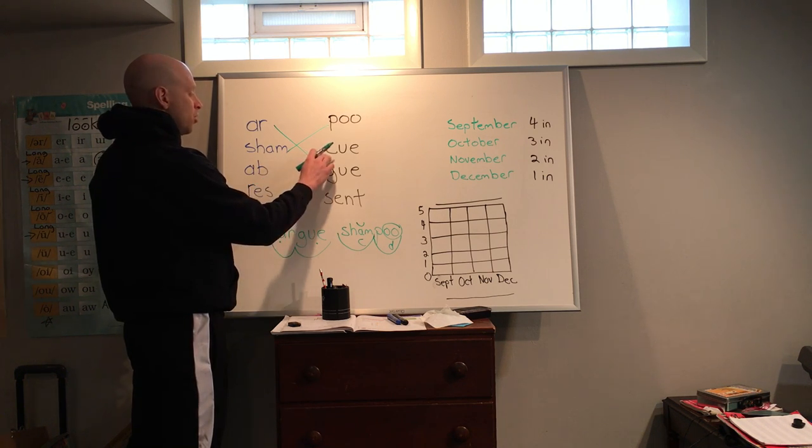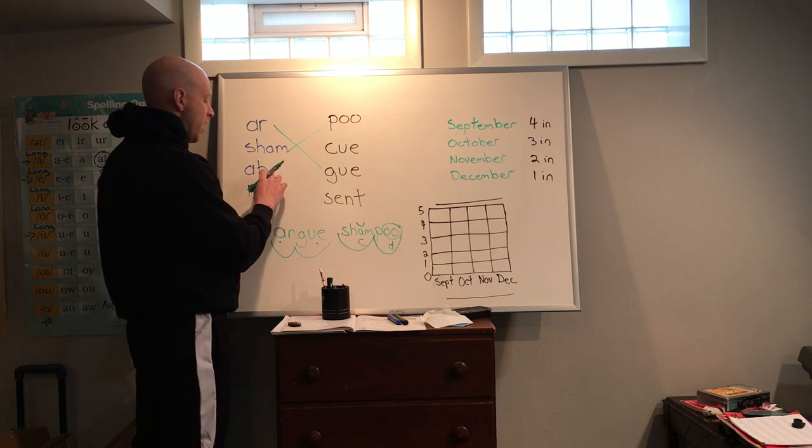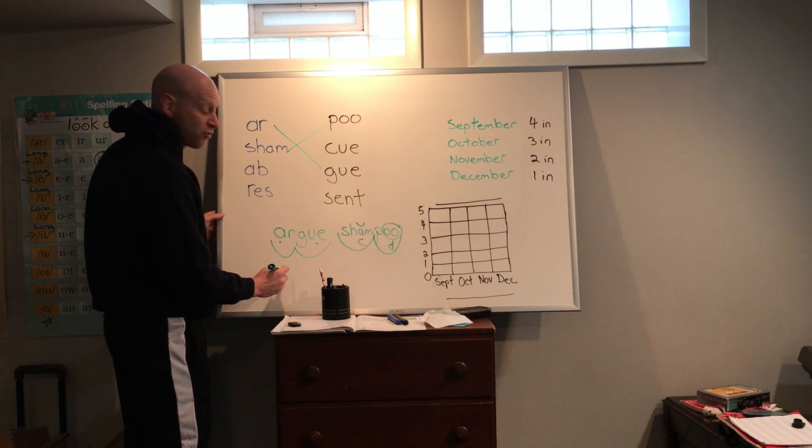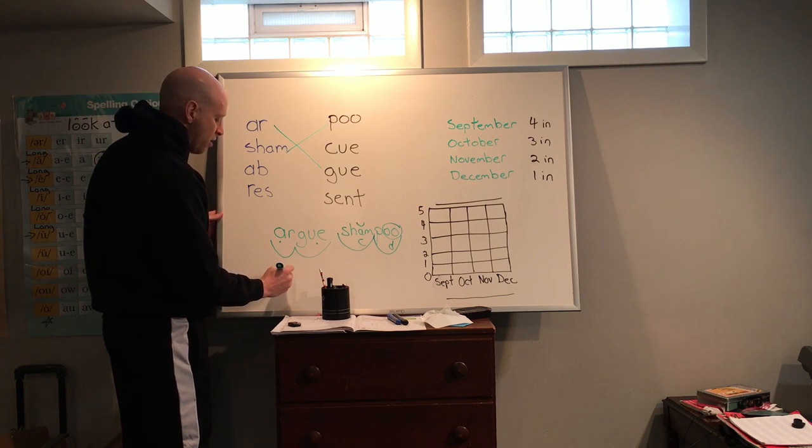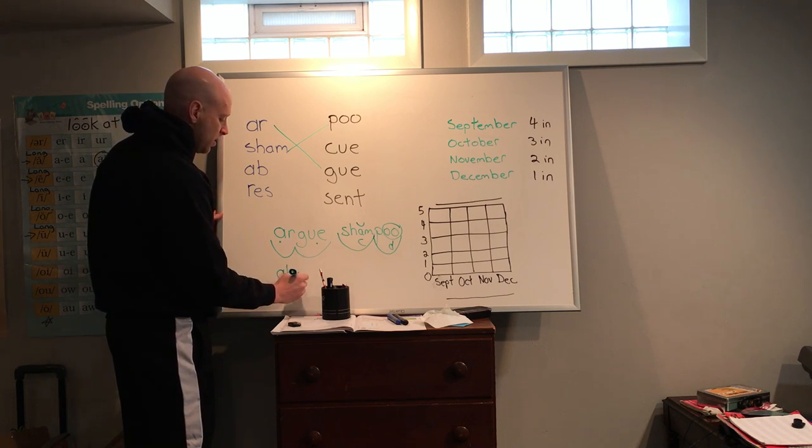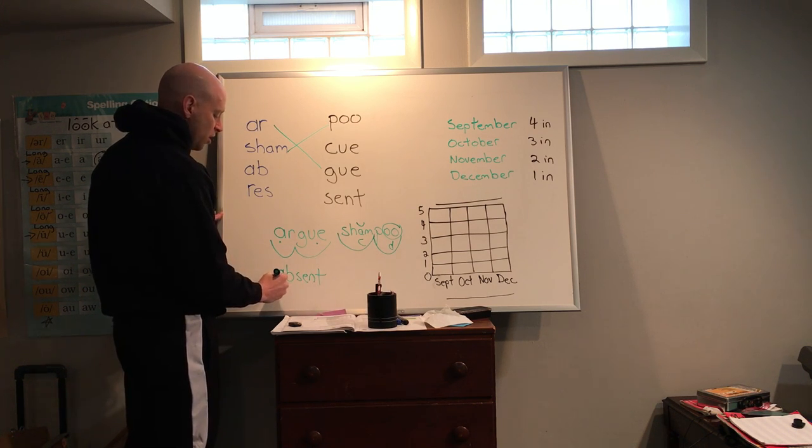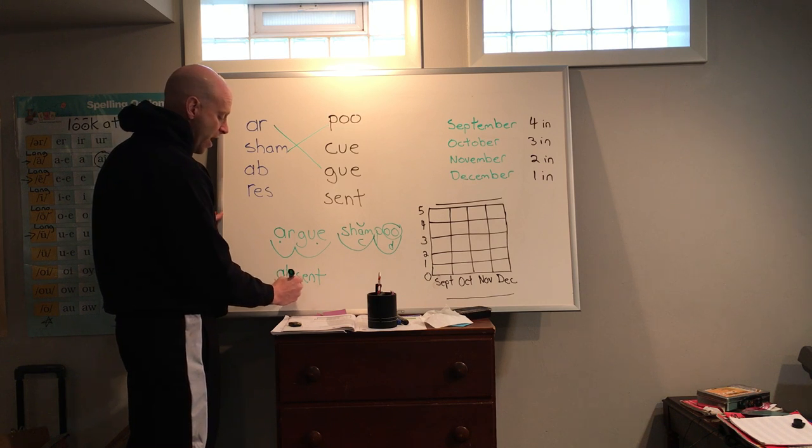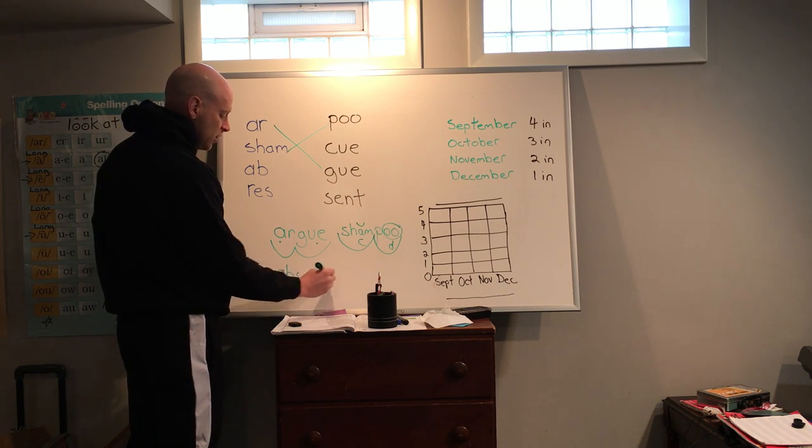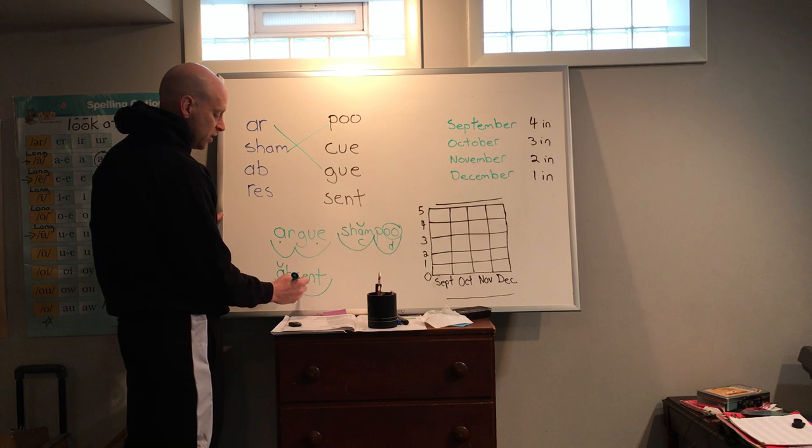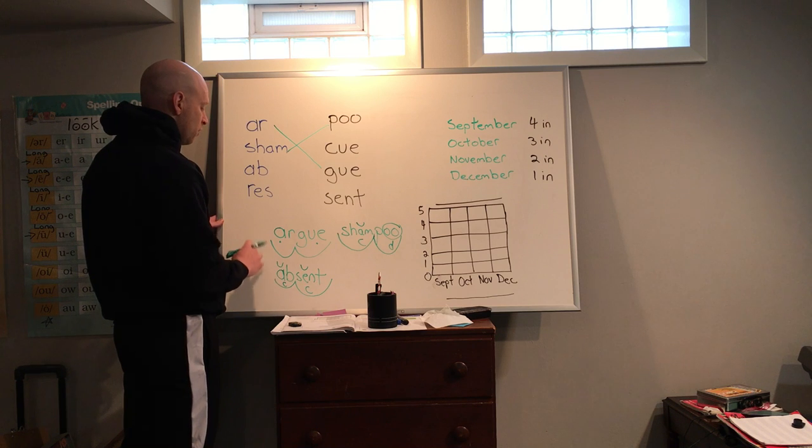Ab-cue. Never heard of that one. Absent. Yeah. I feel like we've been absent for a while. So ab-scent. Ab-scent. So we have two syllables. Ab-scent. We have the short A. Ab. It's closed. Scent. Short E. That's closed as well.